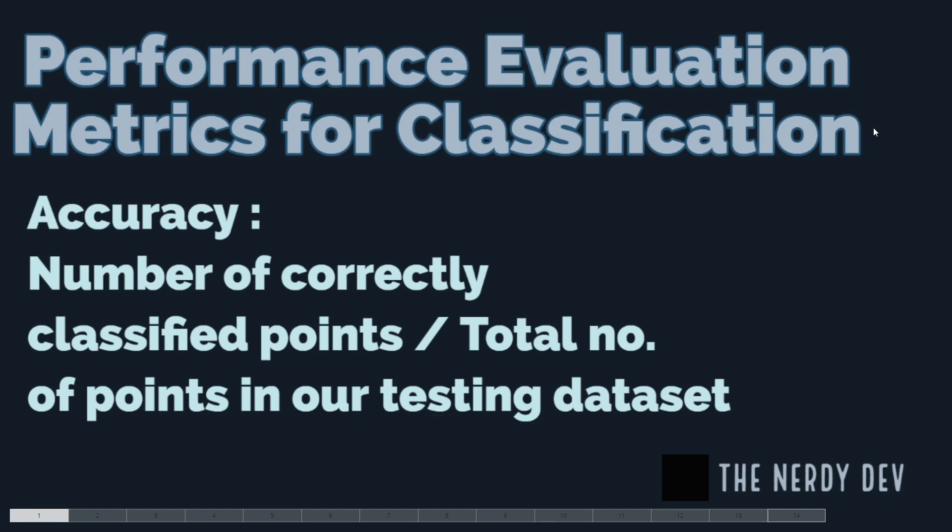In the context of classification, accuracy is defined as the number of correctly classified points divided by the total number of points in your testing data set.